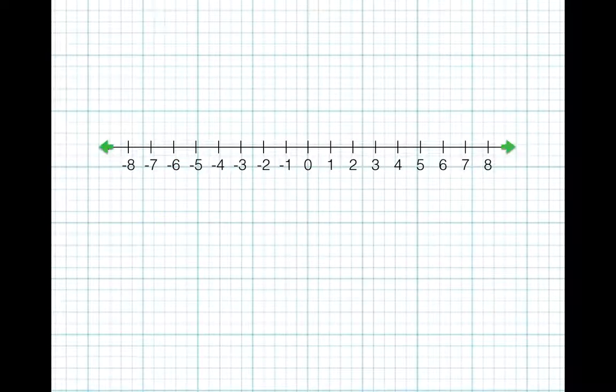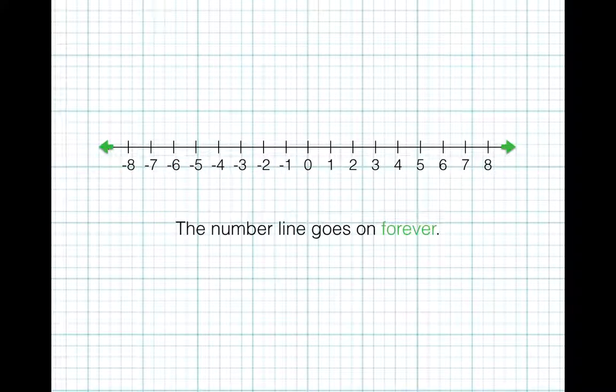The arrows at the end of a number line show that the number line goes on forever.